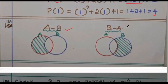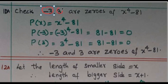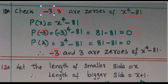Question 10: Represent A minus B and B minus A using a Venn diagram — the shaded part in green is A minus B and the other part is B minus A. Also, check whether minus 3 and 3 are zeros of x to the power 4 minus 81. Substitute P(minus 3): minus 3 to the power 4 minus 81. When the answer is 0, minus 3 is a zero. Both minus 3 and 3 give an answer of 0, so they are zeros of x to the power 4 minus 81.